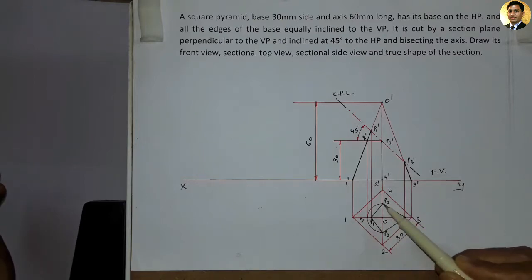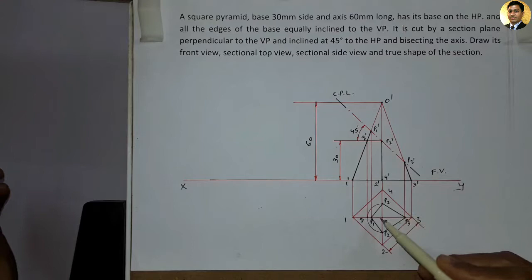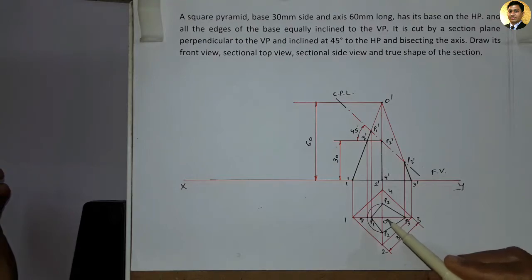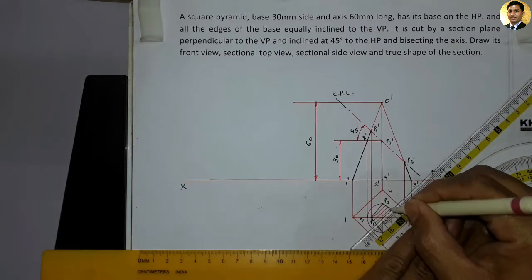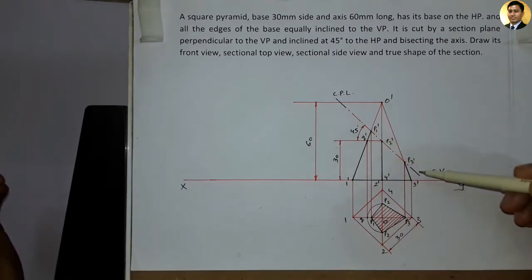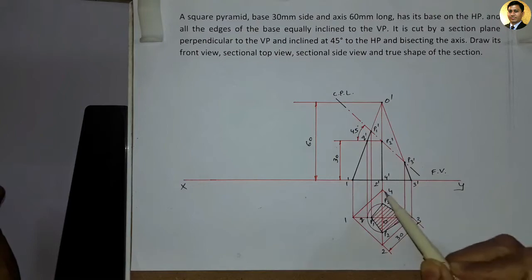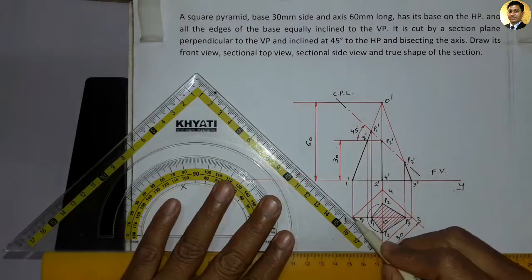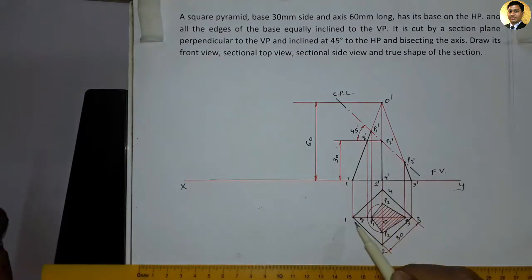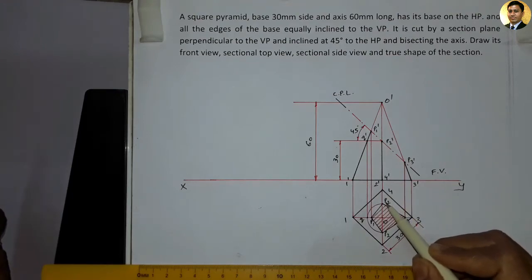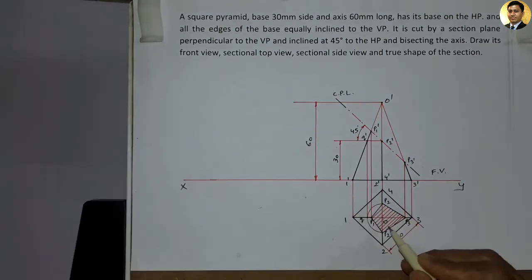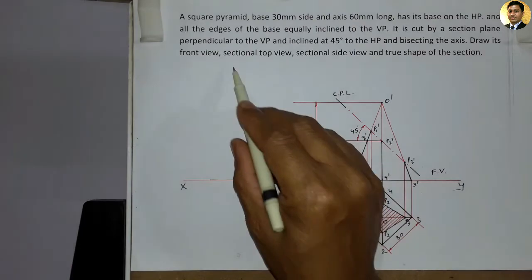Toh yahaan par P1, P2, P3, P2, aur P1 ke beech ka jo humein area mil raha hai woh hai section surface. Isme hum 45 degree ke angle par hatching lines draw karenge aur lines ke beech ka distance rakhenge approximately 2-3 mm. The cutting plane line is shown; this pyramid base is not cut. Points 1, 2, 3, 4 and back to 1 are joined with dark line. P1, P2, P3, P2 dark line — this is the sectional top view.